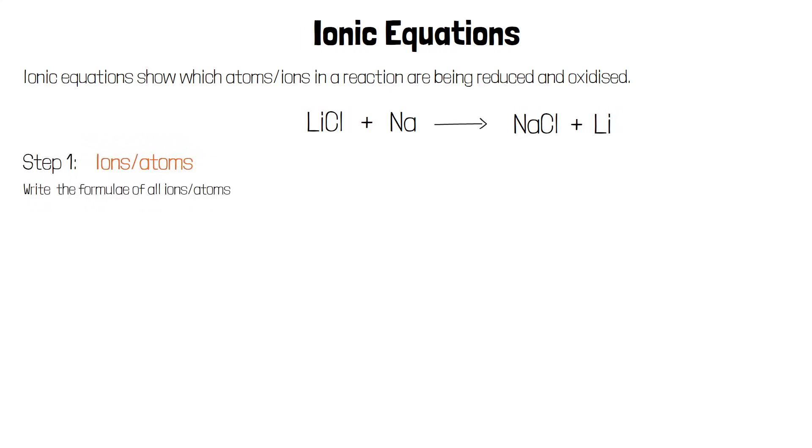The first step for writing an ionic equation is to write out the formula for each atom or ion involved in the reaction. Lithium chloride contains two ions, Li plus and Cl minus. Pure sodium is simply Na, it has no charge.